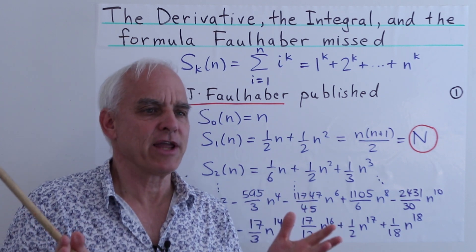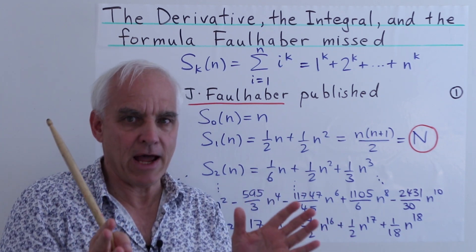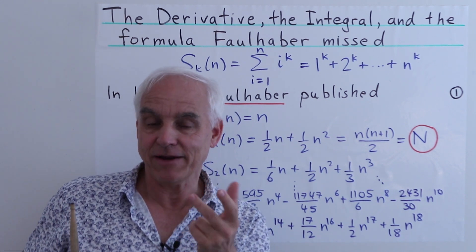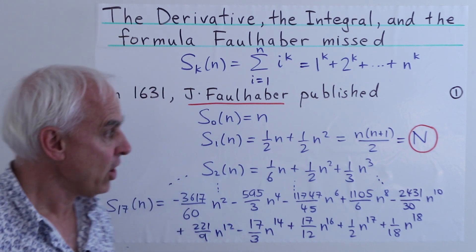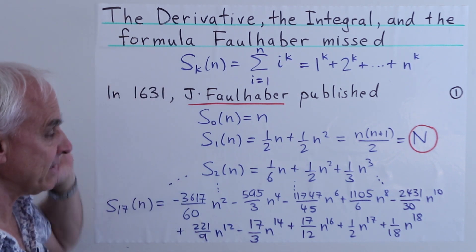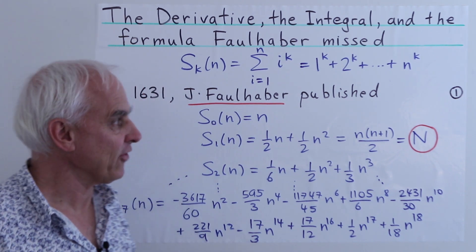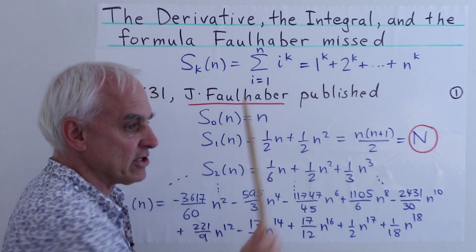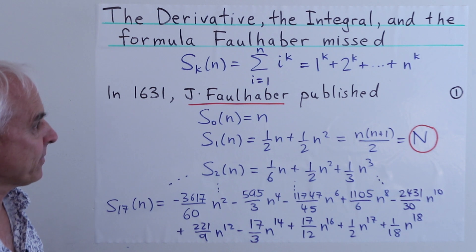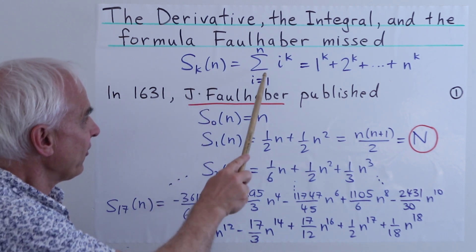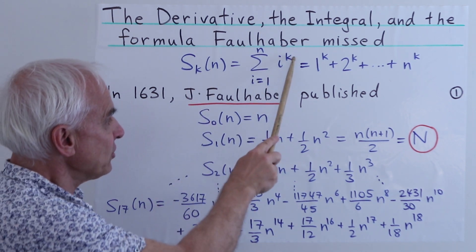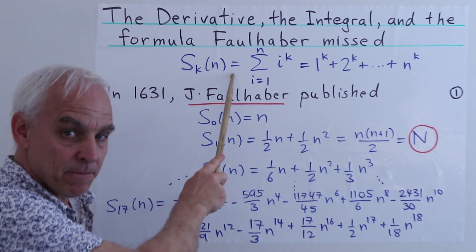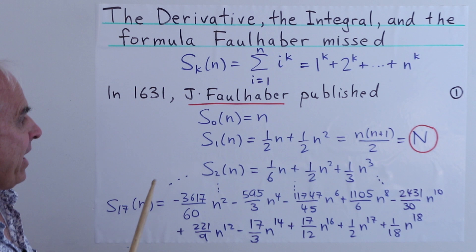These are of course the central concepts of calculus, but we're going to be looking at them from the point of view that Faulhaber originally had — a very algebraic point of view. The context is sums of powers: S_k(n) is the sum from i equals 1 to n of i to the k, and this is a polynomial in n that depends on k.